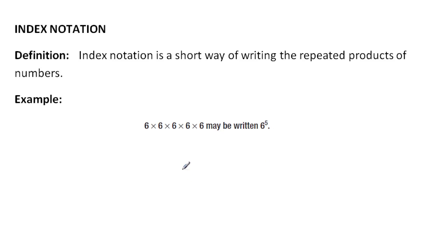So when I write this in index notation, you can see that the six is this part of the number right there, and five is just an indicator of how many times the number six is multiplied together.